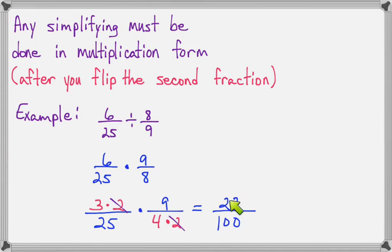So we'll cross those out and that's going to leave us in the top 3 times 9 is 27 and in the bottom 25 times 4 is 100. So this is not an improper fraction, so we don't even have to wonder if it could be changed to a mixed number because it's not even improper. And we know it's fully simplified because there are no common factors in the top and the bottom.